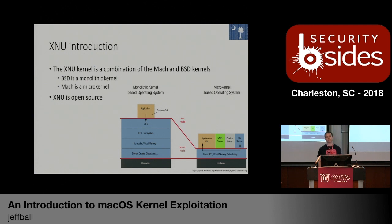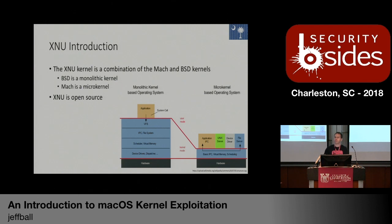One other thing to note is the XNU kernel is open source. Apple puts it up on opensource.apple.com and also has a GitHub that lags slightly behind. You can go get it, compile it, make changes, and install it yourself on your MacBook. They don't always have the latest version up — right now the latest open-sourced version is 10.13.6, and they're on 10.14 for Mojave.